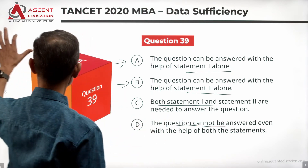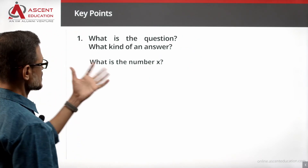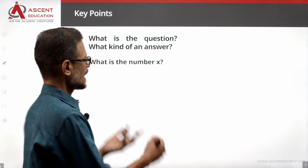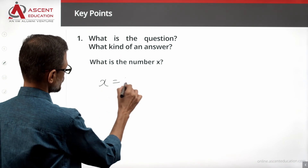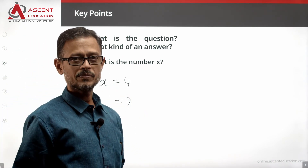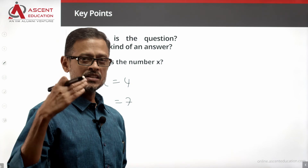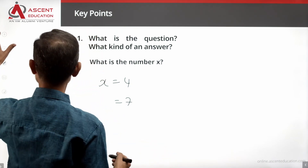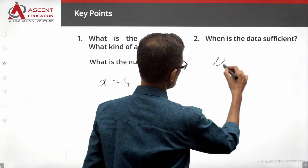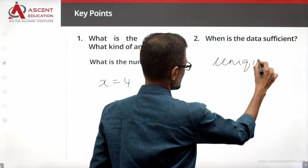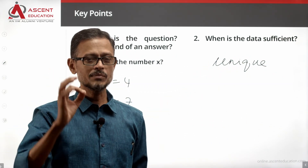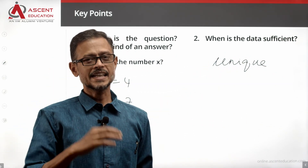What is X? The data is sufficient when we have a unique value — one single answer, such as x equals 4. That means one number: data is sufficient.